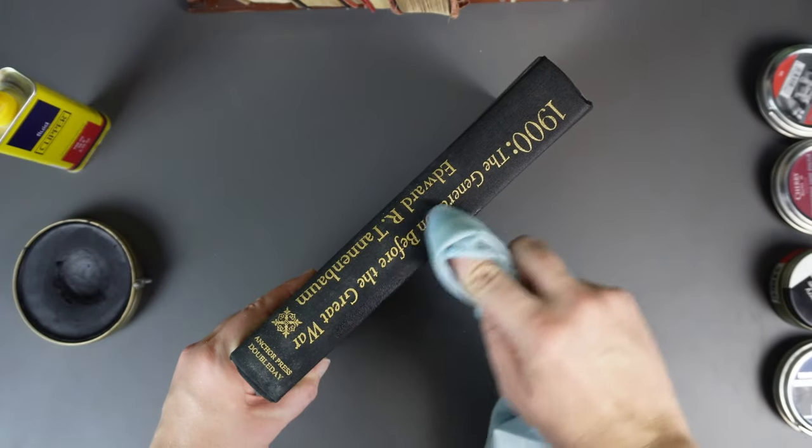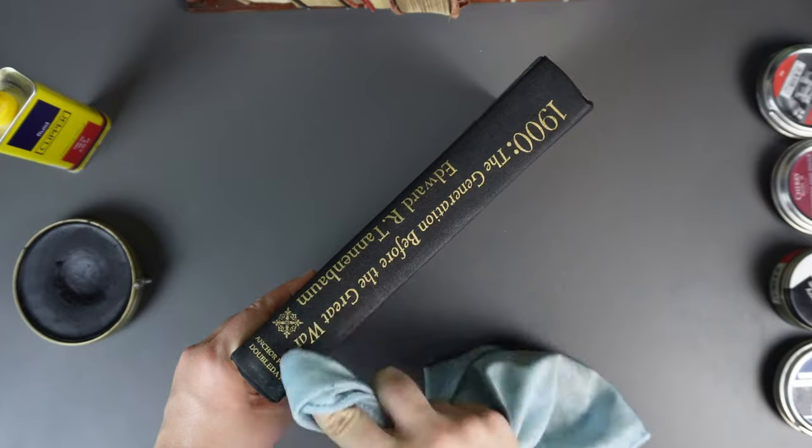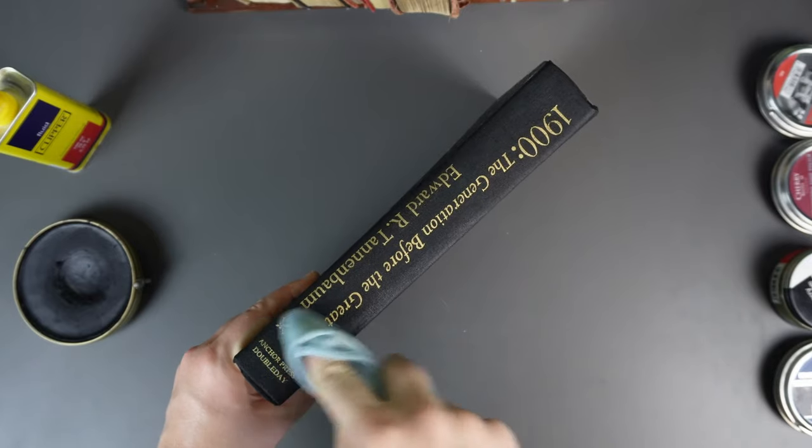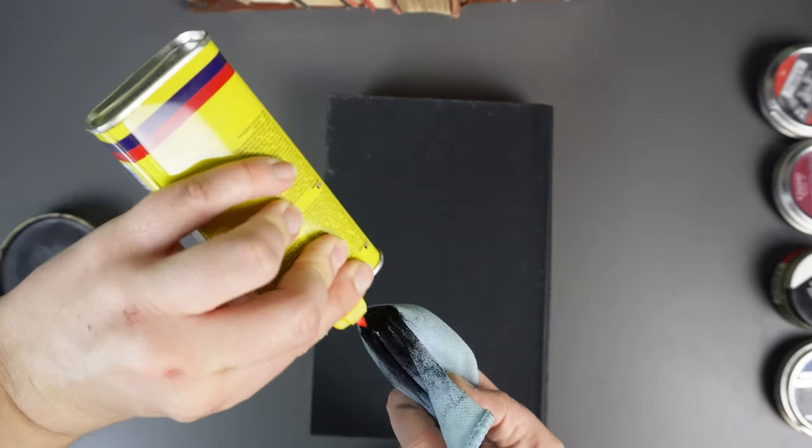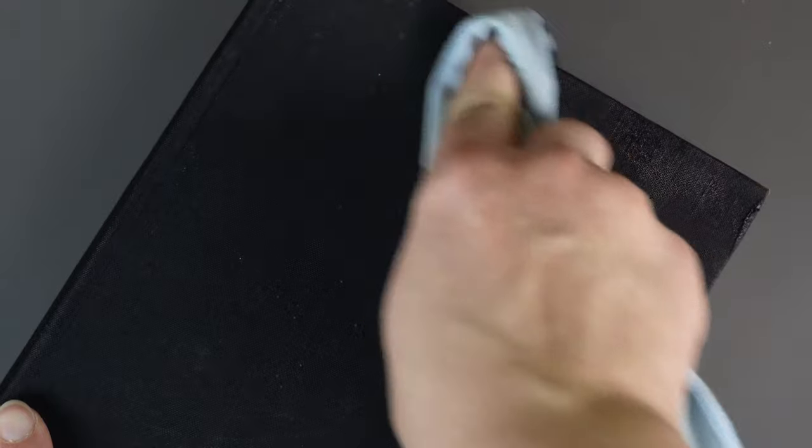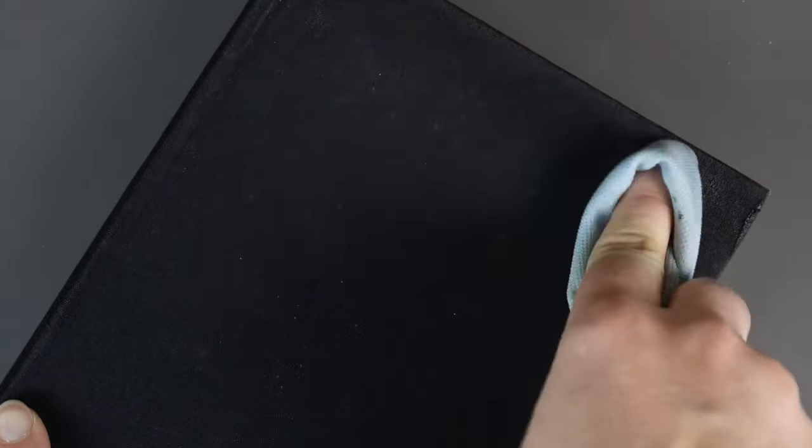That said, I have accidentally put too much polish on in the past, and it did work its way into the very edges of the letters, slightly discoloring them, so I would say go lightly on the rubbing around the letters, even if taking multiple passes is necessary. Patience is key with a lot of these book repair techniques.